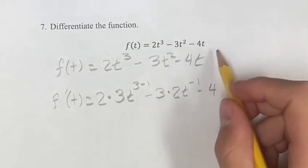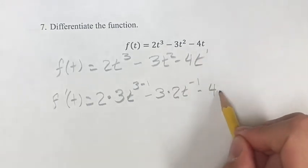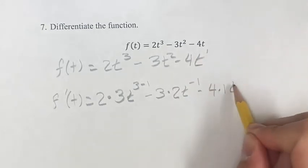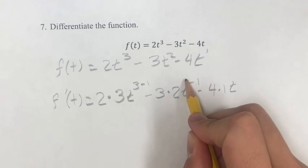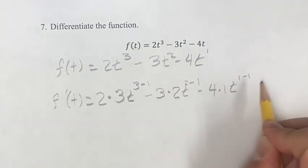Again, third time, this is t to the 1, so bring 1 down times t to the, don't forget that, t to the 1 minus 1.